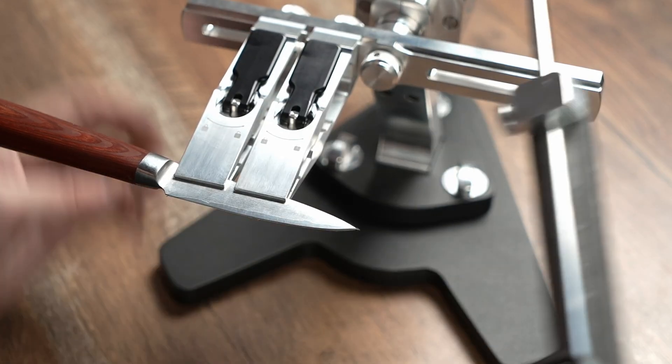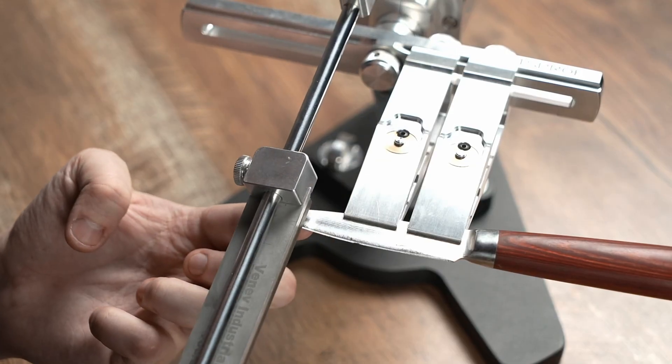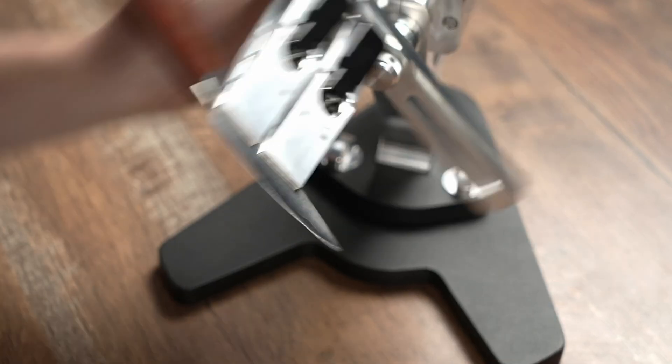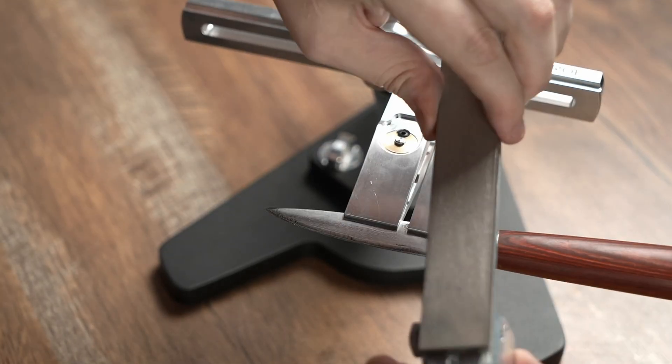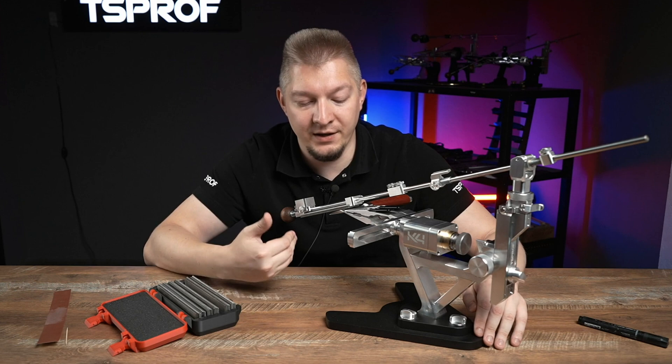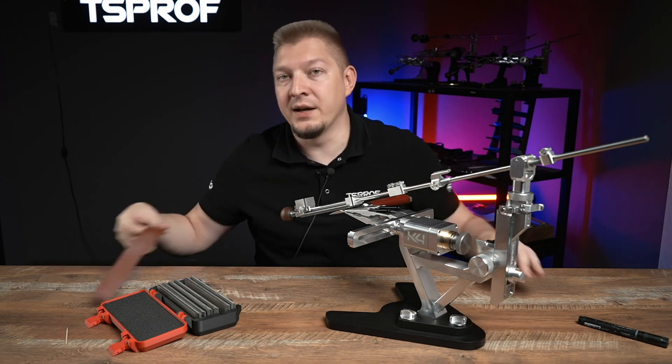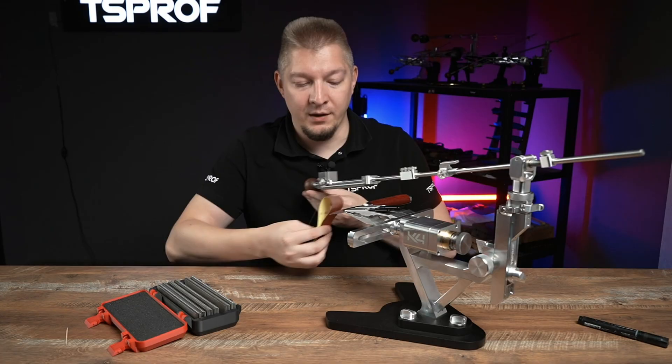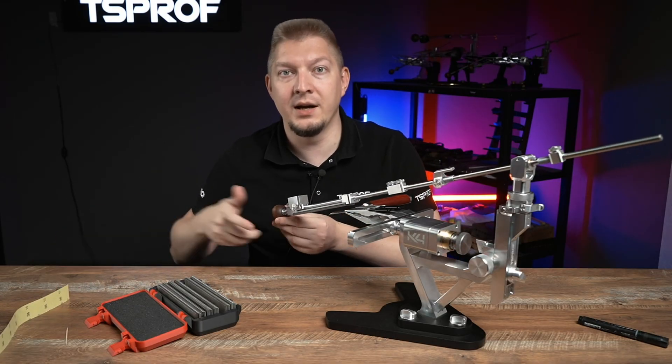As a result we consistently achieve a perfectly clean and exceptionally sharp cutting edge. We've removed the burr and now we switch to the next stone. If you notice that after using the next stone you still have a foil-like burr that's interfering with your sharpening, then we create a technological barrier as well. We slightly dull the knife, remove this burr and continue sharpening.